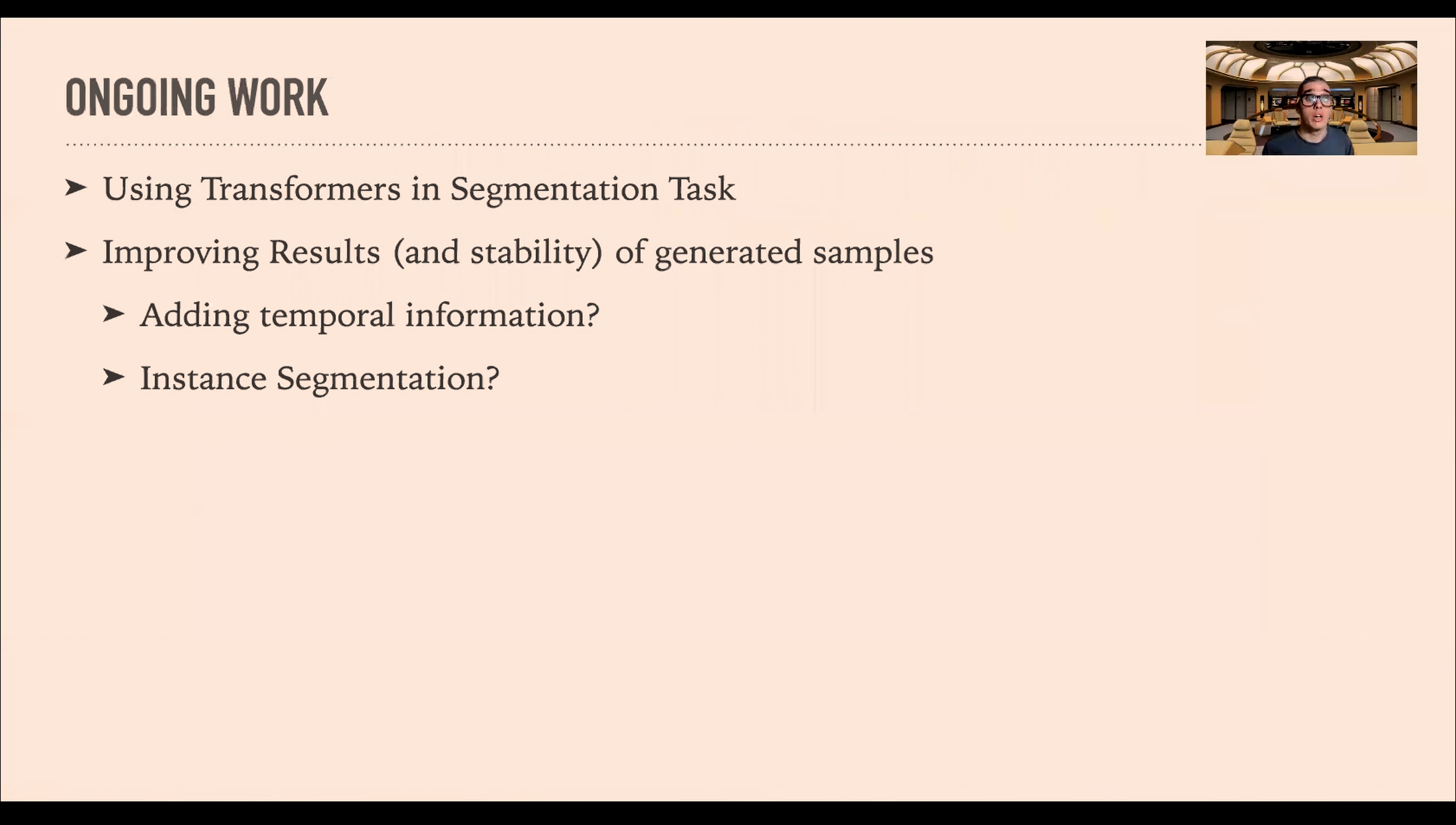The ongoing work is trying to use transformers. We have seen transformers that operate on computer vision tasks with very good results. The results we have so far are quite good, but we can see some flickering in terms of the classes like cars, bicycles, people. To try to overcome that, we are thinking about adding temporal information, and we are playing with instance segmentation, panoptic segmentation.